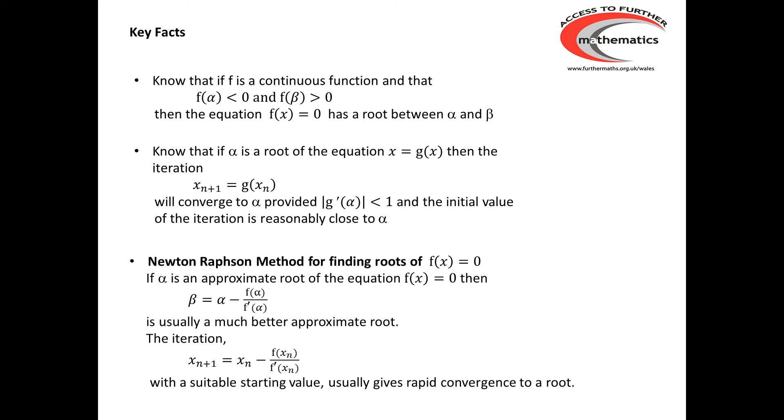The Newton-Raphson method for finding roots of f(x) = 0 simply says that if alpha is an approximate root of the equation f(x) = 0, then beta, which is given by α - f(α)/f'(α), usually gives a much better approximate root. This leads to an iteration formula x_(n+1) = x_n - f(x_n)/f'(x_n). And this iteration with a reasonable starting value usually gives very rapid convergence to the desired root.